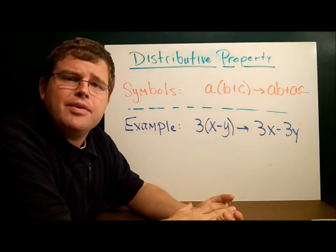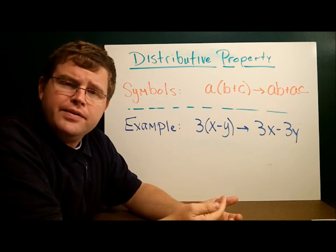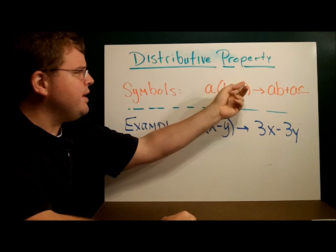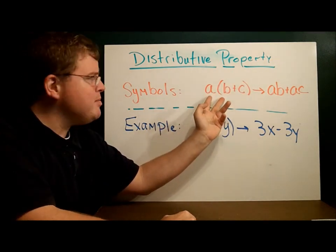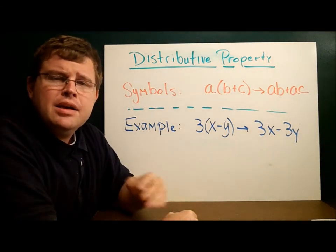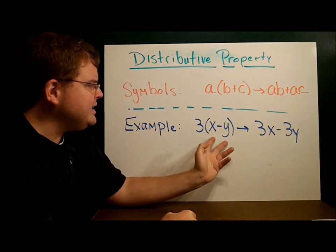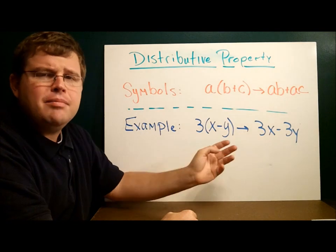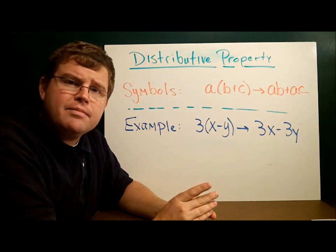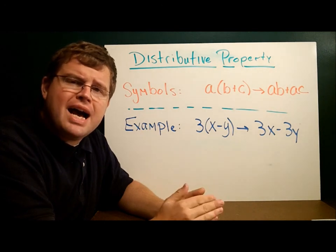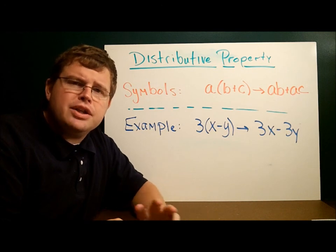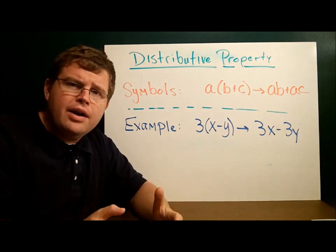Here's one more property — everyone's favorite: the distributive property. If you have A times the quantity (B plus C), you multiply both things inside by A to get A times B plus A times C. For example, 3 times (x minus y) distributes to 3x minus 3y. Notice it is not the 'distributive property of equality' — it operates on one side of an expression, not both sides of an equation.